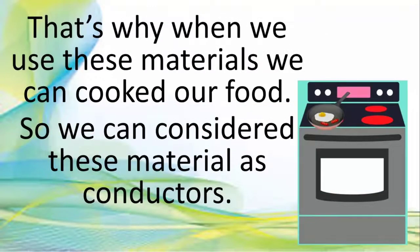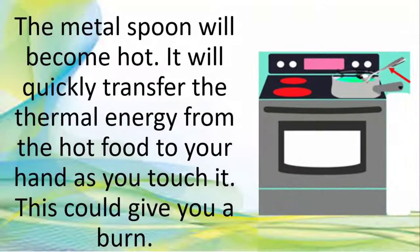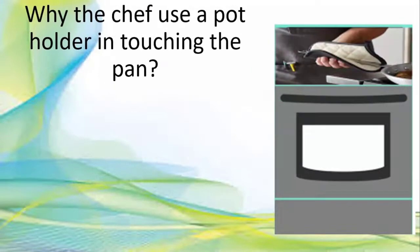That's why, when we use these materials, we can cook our food. What do you think will happen if you use a metal spoon to stir your food and you accidentally leave it in there? The metal spoon will become hot. It will quickly transfer the thermal energy from the hot food to your hand as you touch it. This could give you a burn. That is one of the characteristics of conductor materials is to allow the heat to pass through.